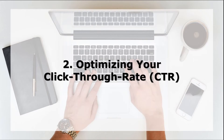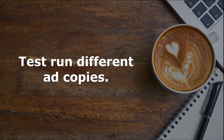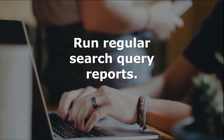Two, optimizing your click-through rate or CTR. Your CTR directly affects the performance of your quality score, which is the relevance of your campaign. This will then determine how much you pay per click. To optimize your CTR, test run different ad copies to see which version gets the most clicks. This can be done by running a new ad alongside the old one for a week or so and keep the winning ad. You can also run regular search query reports to detect irrelevant search queries that could be causing a high amount of impressions and unwanted clicks. These kinds of search queries can be added to the list of negative keywords to improve CTR.